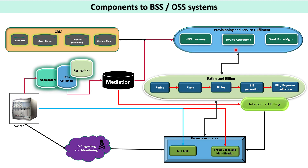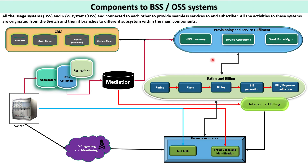When rating and billing is discussed exclusively in a dedicated video, it will be explained how these systems are connected and what the main components are that exchange information between them. Overall, all BSS and network systems are connected to each other to provide seamless service to the end subscriber. All activities originate from the switch and branch out to different systems. Mediation is the heart of the telco operator — from where total functioning and distribution of usage starts, including rating, billing, revenue assurance, and interconnect.